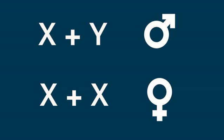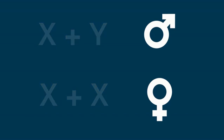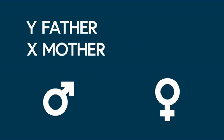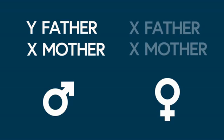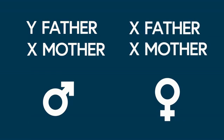The pair of sex chromosomes is made up of one inherited from the father and one inherited from the mother. This means that a male child inherits a Y chromosome from his father and an X chromosome from his mother. A female child inherits one X chromosome from each of its parents.